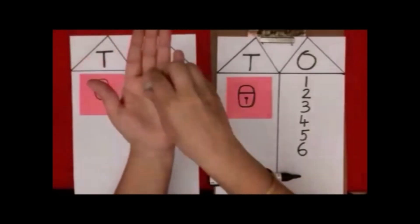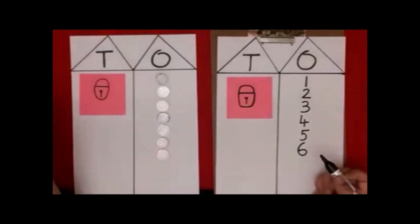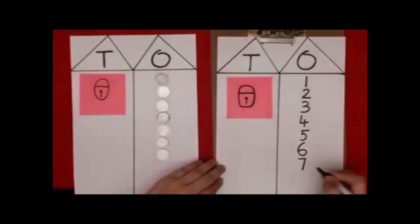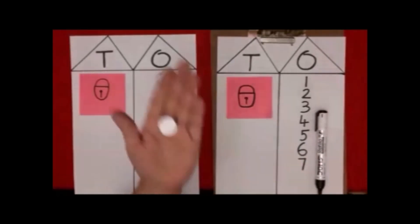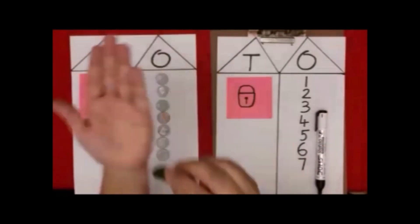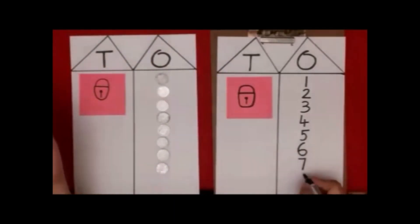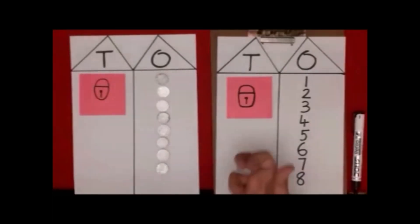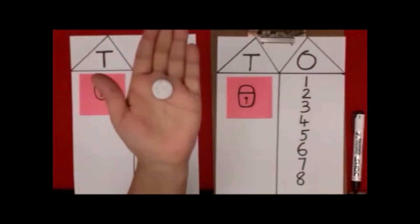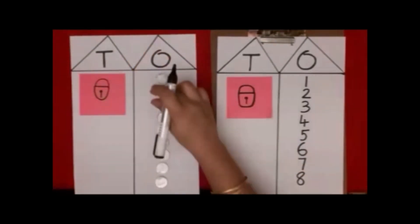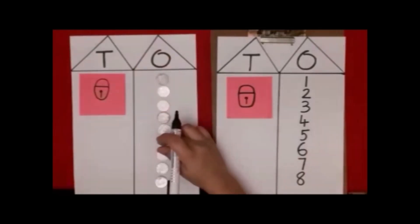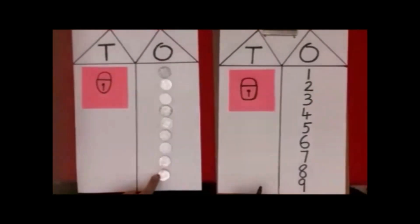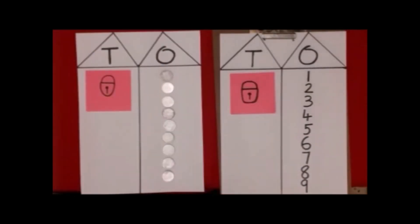One more has come. Now which number? One, two, three, four, five, six, seven. Seven! One more — now which number? Number eight. One more has come. Let's count: one, two, three, four, five, six, seven, eight, nine. Nine ones are there in the ones house.